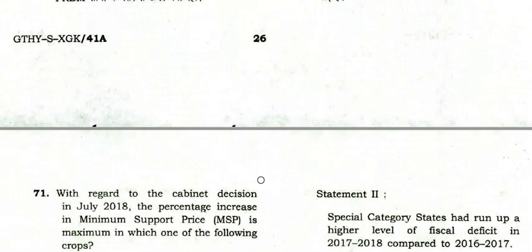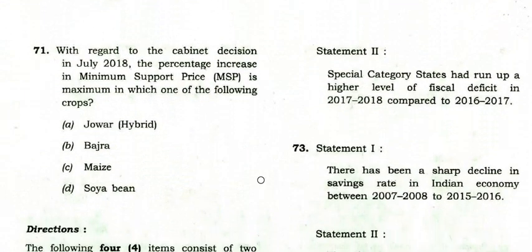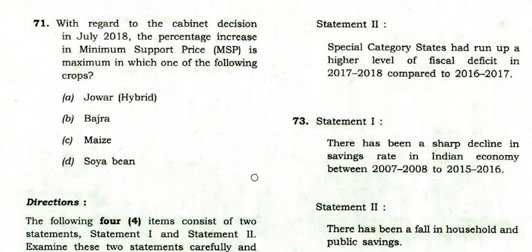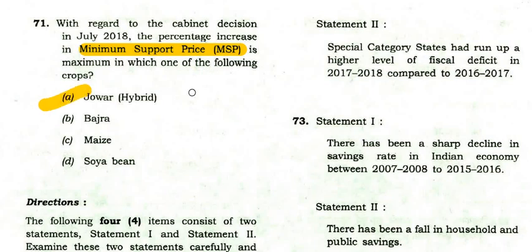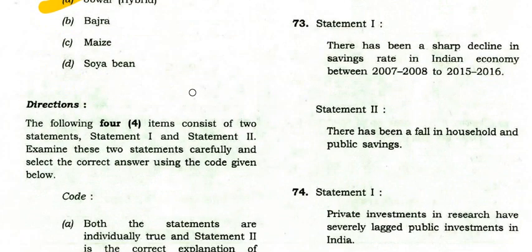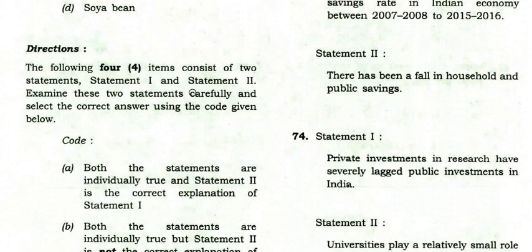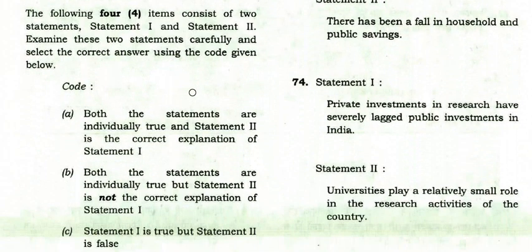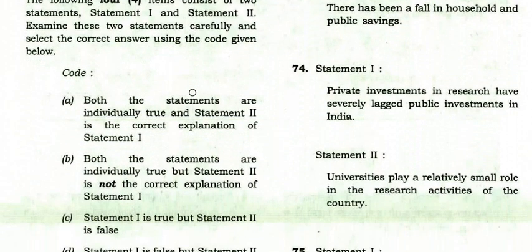With regard to the cabinet decision in July 2013, the percentage increase in Minimum Support Price is maximum in which crop? The right option is A: jowar hybrid.